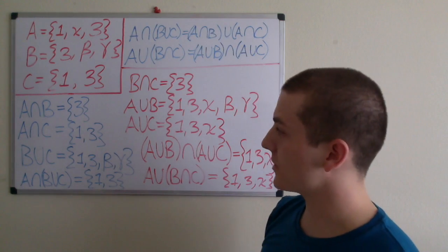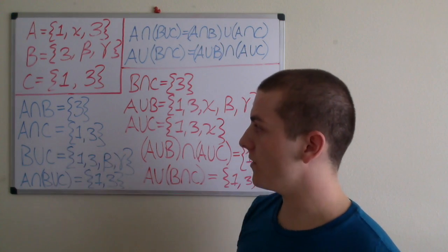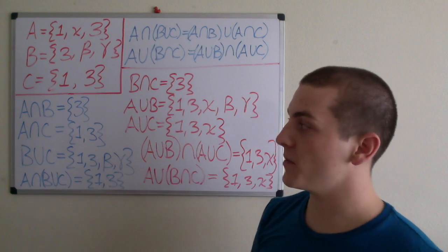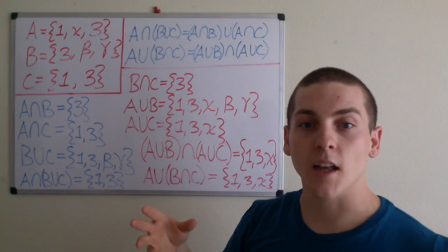And then if we look at A intersection C, that equals the set 1, 3. So the union of these two is going to be the set containing elements 1 and 3.